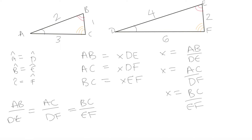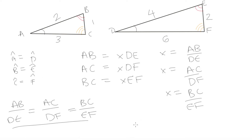So the ratio of our corresponding sides has to be equal. Aligning which angles correspond to which vertices, side AB corresponds to DE, BC corresponds to EF, and AC corresponds to DF. The ratios of each pair of corresponding sides must be equal — that is the second criteria that has to be met to confirm similar triangles.